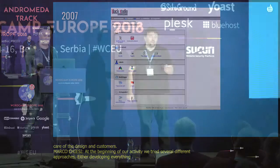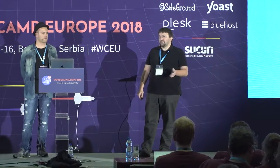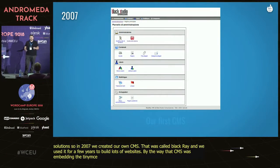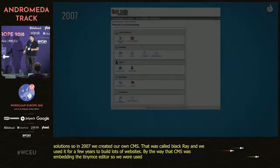At the beginning of our activity, we tried several different approaches for website building — either developing everything from scratch or using existing CMSs. At that time, WordPress did not exist yet. We were not satisfied with any of those solutions, so in 2007 we created our own CMS called BlackRay, which we used for a few years to build lots of websites. That CMS was already embedding the TinyMCE editor, so we were used to it way before moving to WordPress.